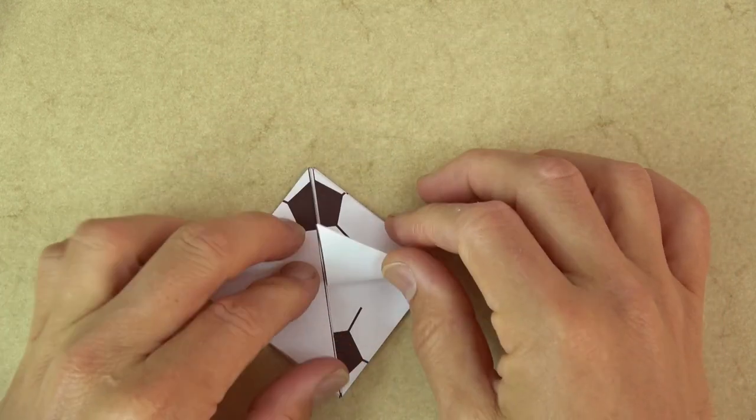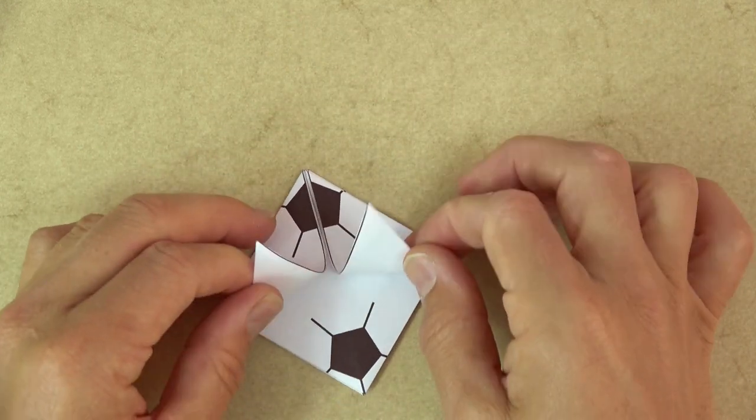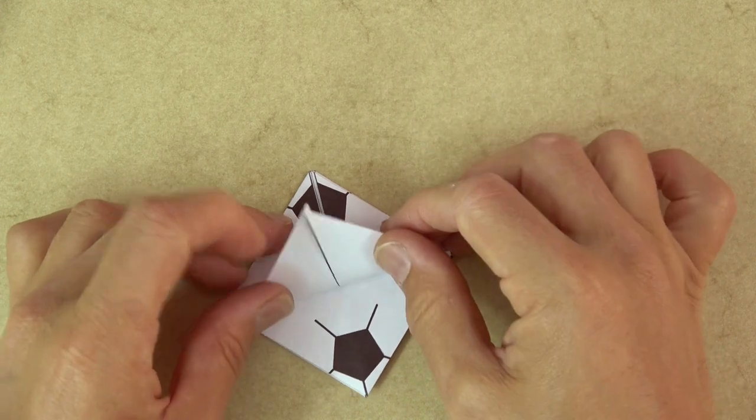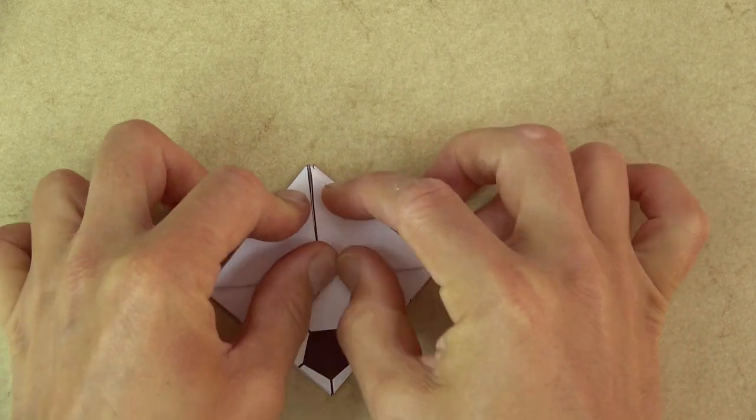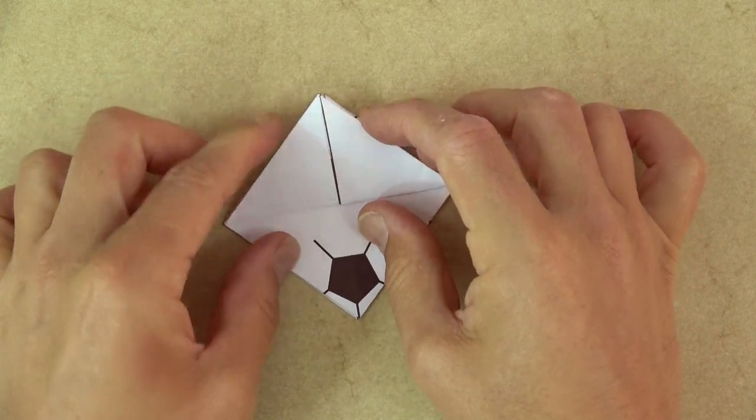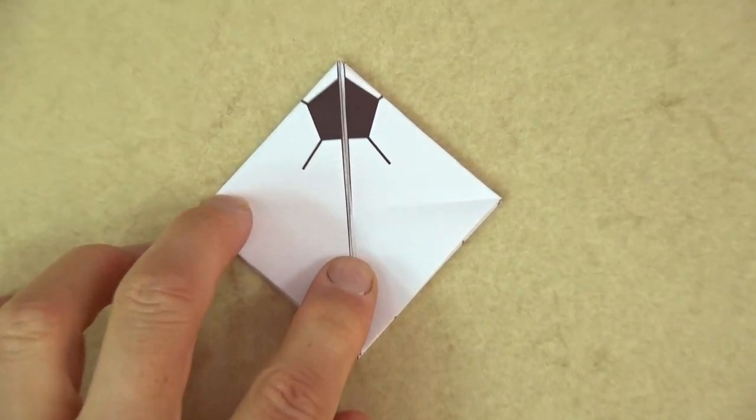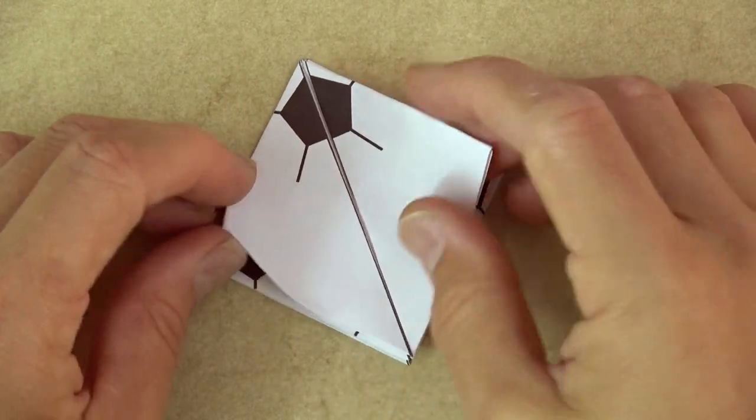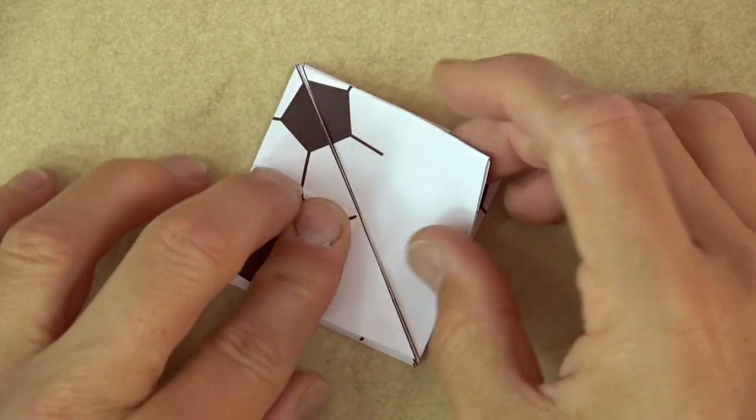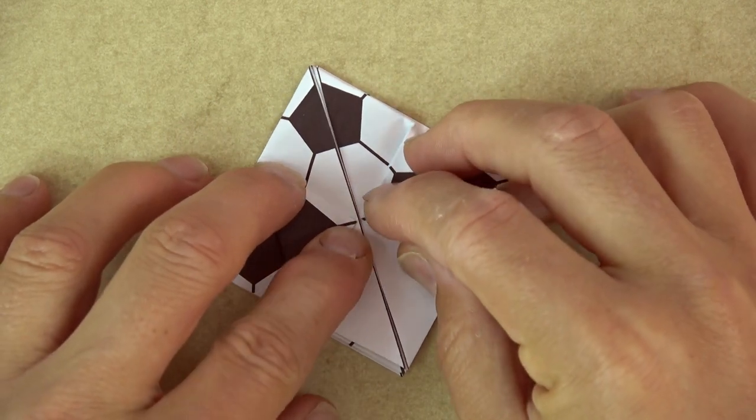And rotate. And fold these two corners to this point. And unfold. And fold these two side corners to the middle point. There and there.